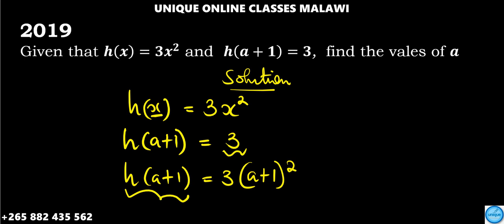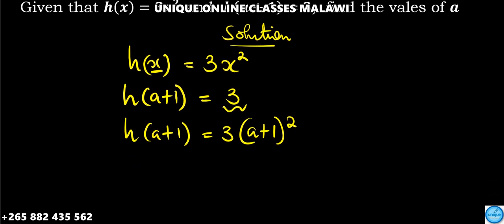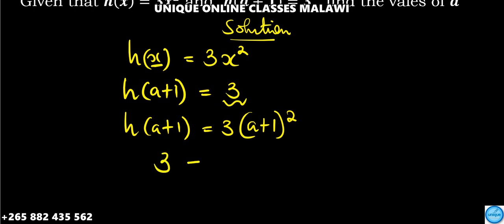h of a plus 1 is equal to 3, so you can just substitute. It is equal to 3 times open bracket a plus 1 then squared.